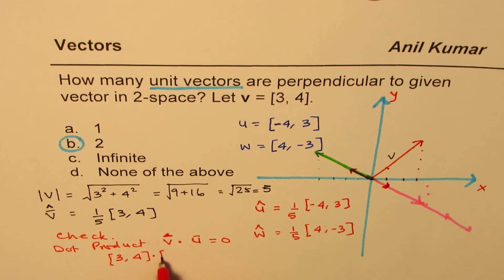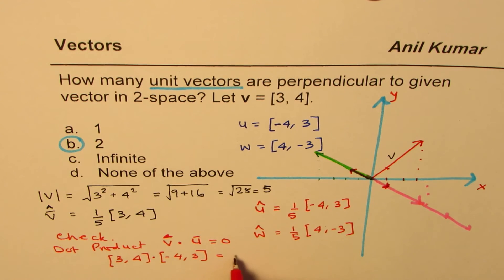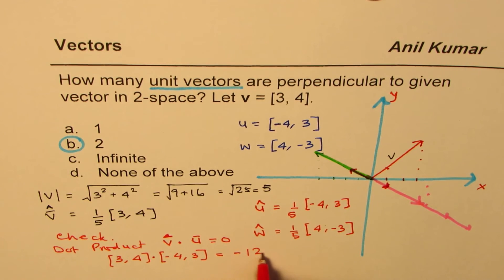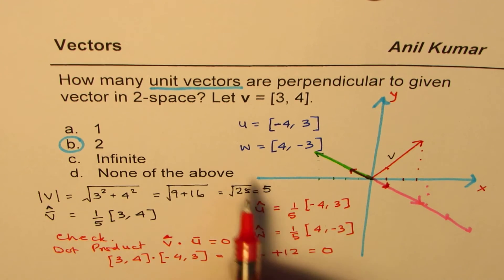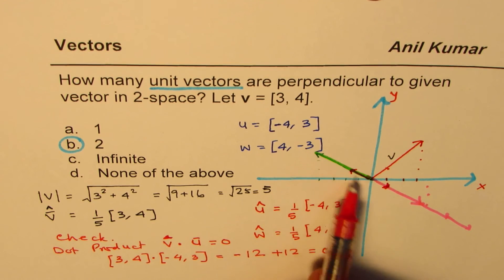You can check that the dot product of [-4, 3]: -4 times 3 is -12, 4 times 3 is +12. So when you add them, you get 0. Same result you will get with w also.